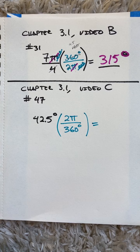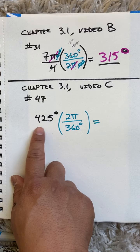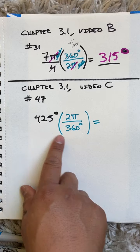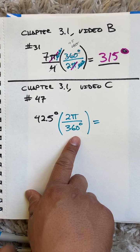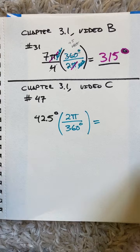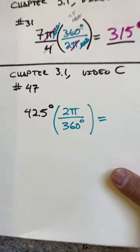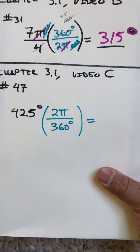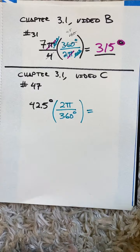So I have 42.5 degrees and I'm gonna multiply it by my converter 2π over 360. It says I can round, so I know I'm gonna round off pi at some point.